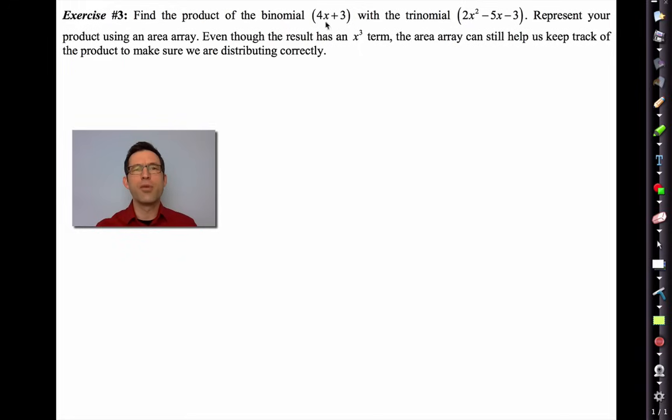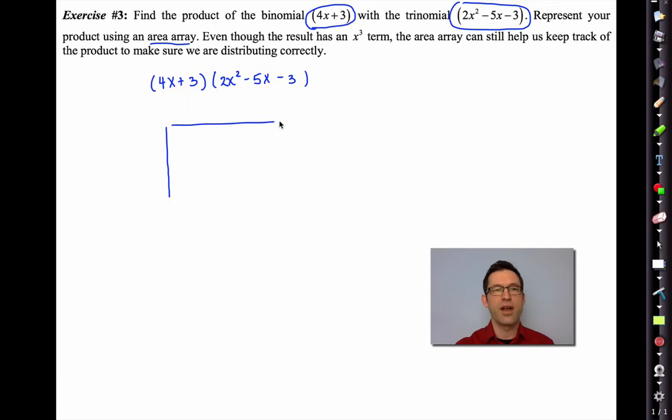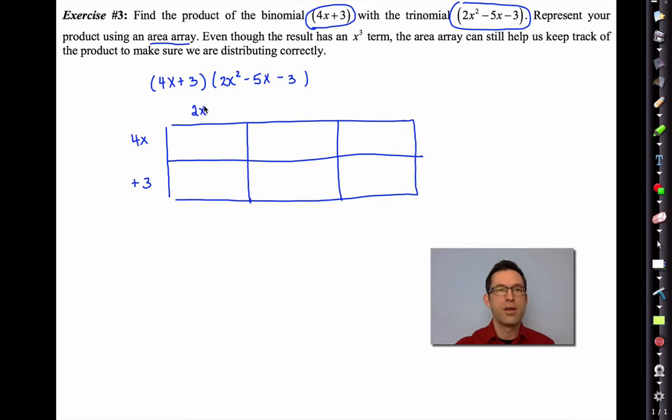Find the product of the binomial (4x + 3) with the trinomial 2x² - 5x - 3. Represent your product using an area array. Even though the result has an x³ term in it, an area array can still help us keep track of the product to make sure we're distributing correctly. We don't need to draw any pictures to do this, but it certainly doesn't hurt. What I've got now, I've got a slightly different kind of area problem here. I've got an overall rectangle. On one side, we're just going to have two terms, a 4x. And I think I'm going to attach the plus 3 down here.